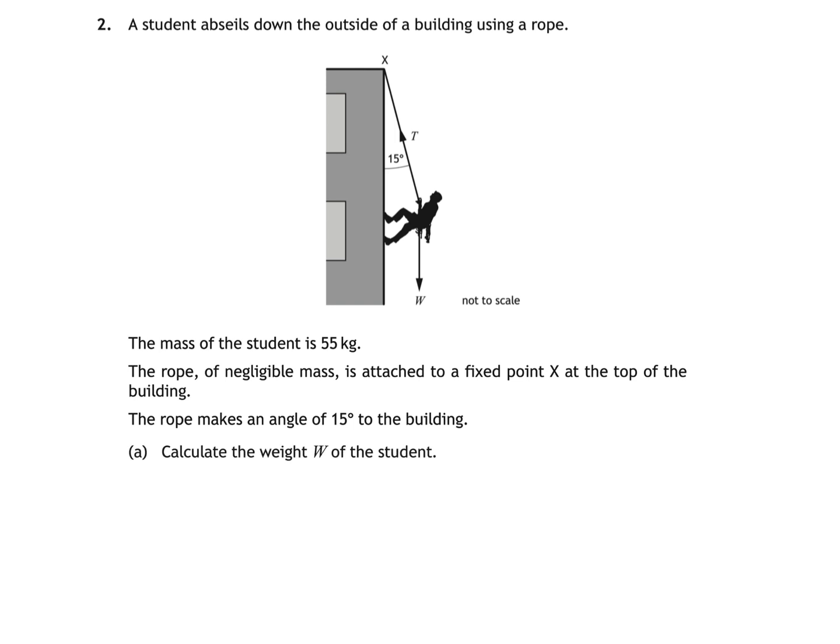the question then asks us to calculate the weight W of the student. So we're using this equation where the weight W is equal to mass M times gravitational field strength G. G is found from the data sheet as the gravitational acceleration on Earth, 9.8 m/s². Gravitational field strength in newtons per kilogram is numerically equal to this value. That gives us 55 times 9.8 which equals 539 newtons or to two significant figures 540 newtons.